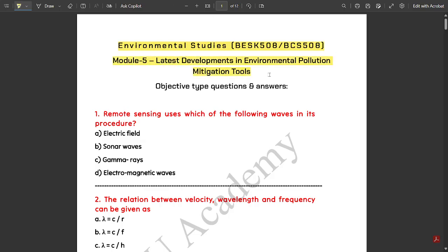In this video, we are going to discuss module five. The module name is Latest Developments in Environmental Pollution and Mitigation Tools. This is a two credit subject, so you should have a proper eye on it, as this is not a one credit subject.